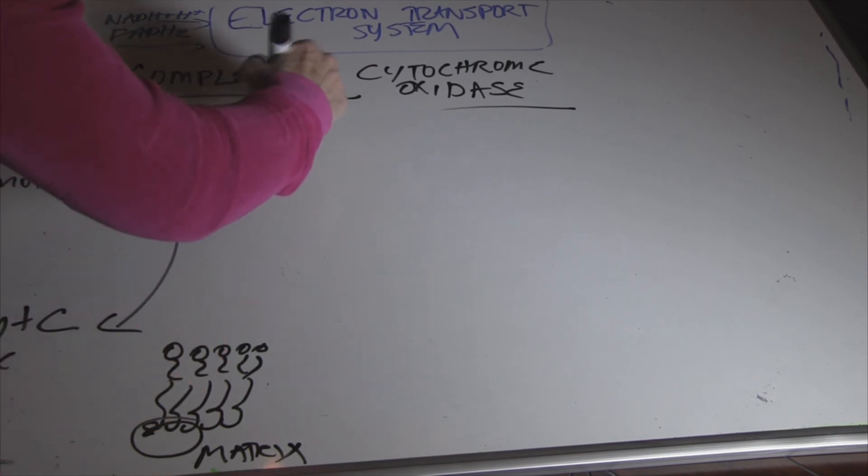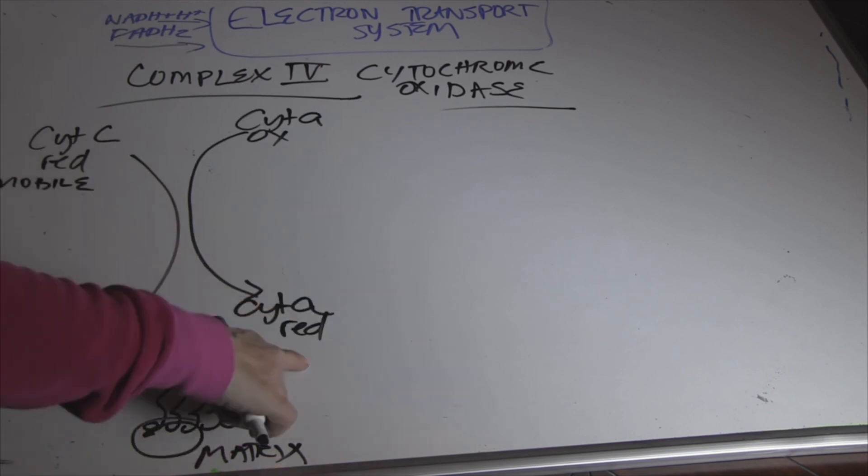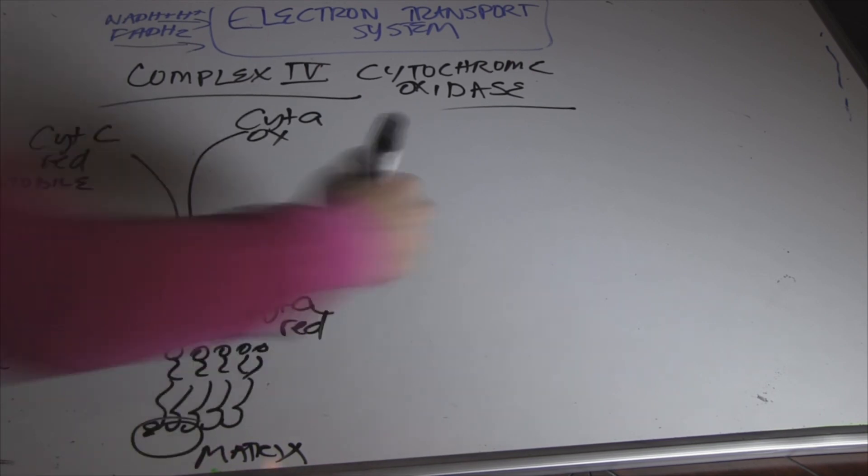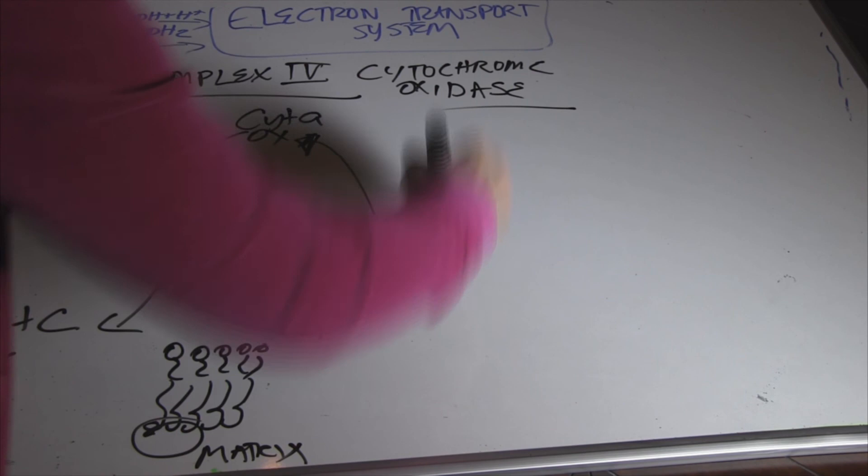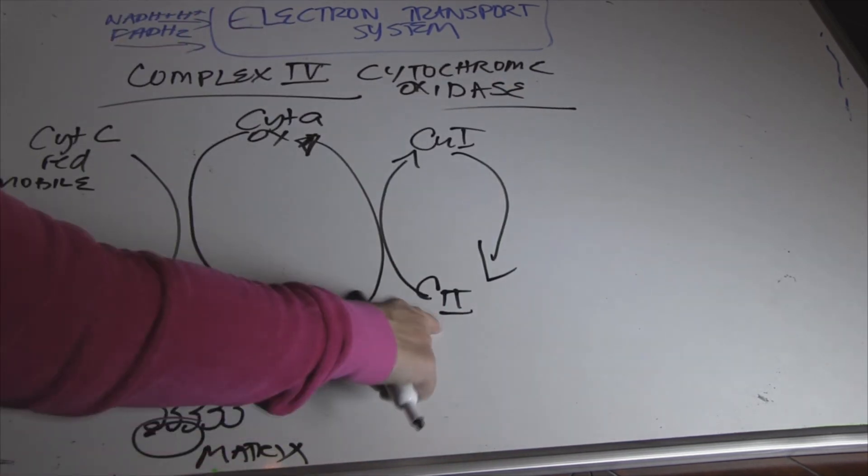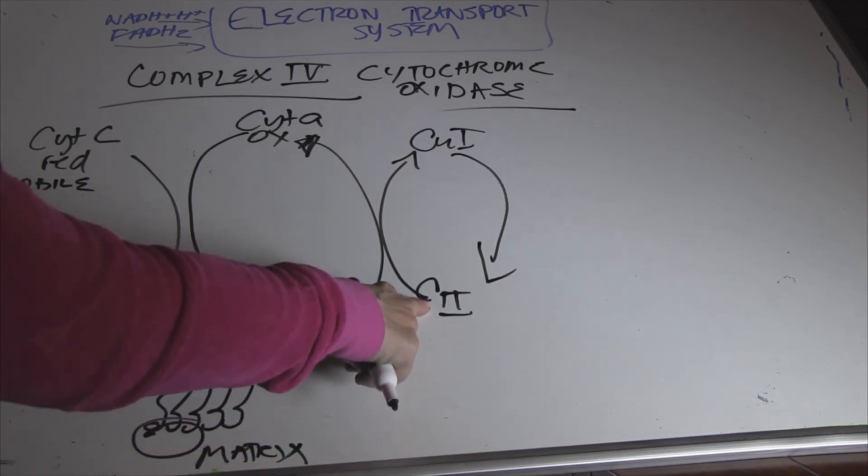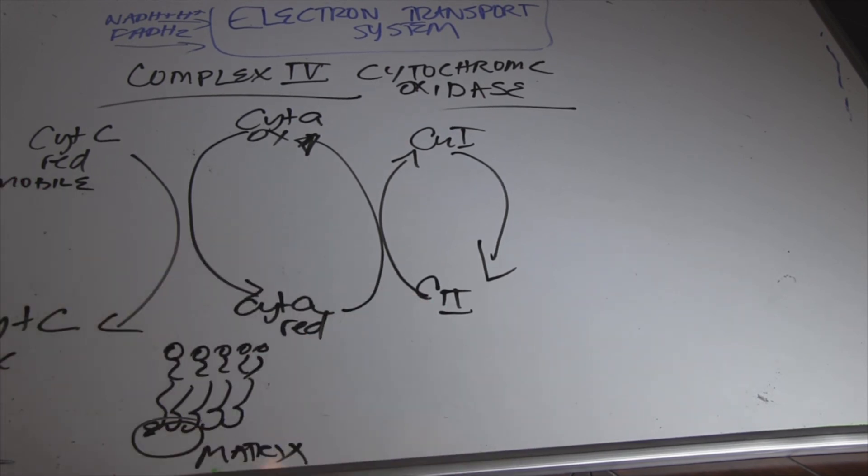So it's going to be dropping off at complex 4. Who accepts it is cytochrome A. So cytochrome A will become reduced. Then we have copper. So copper, instead of iron, will be an electron carrier, or I would say a cofactor in this case.